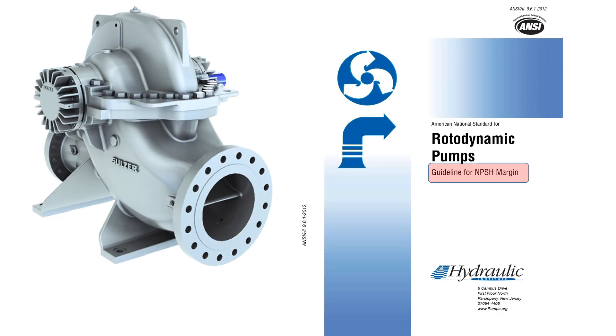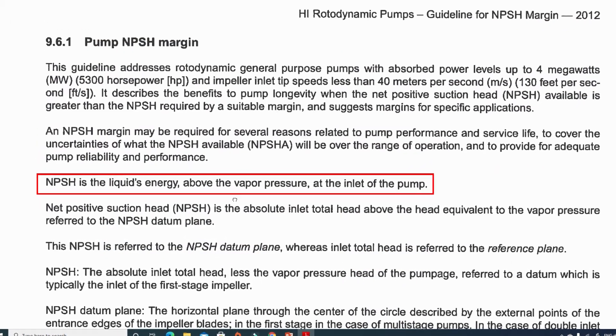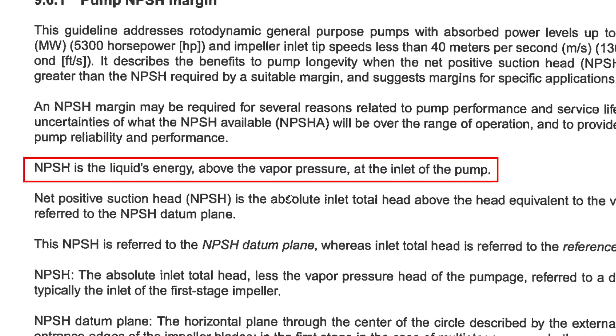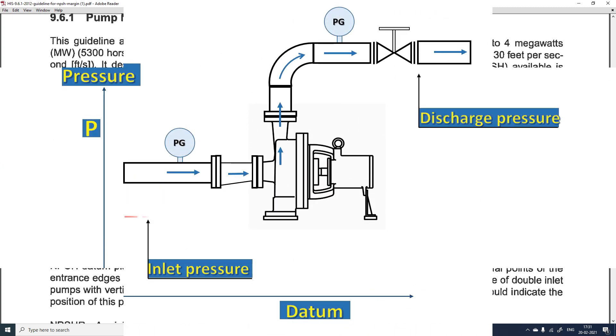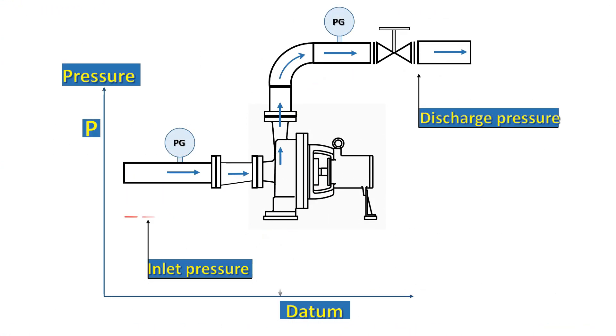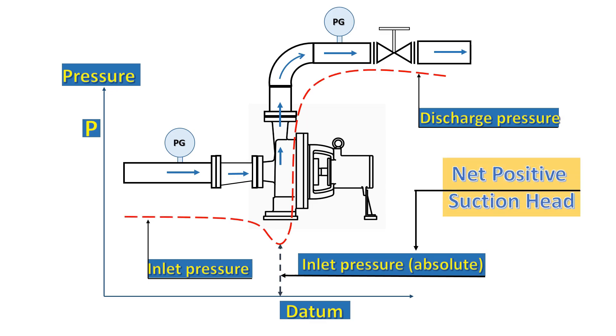Let's start this video. As per Hydraulic Institute standard, NPSH is the liquid energy above the vapor pressure at pump inlet. Let's simplify this statement. Each pump requires some minimum absolute pressure at pump inlet to avoid cavitation. This minimum absolute pressure, or absolute head in terms of height of liquid column, at pump inlet is known as net positive suction head.